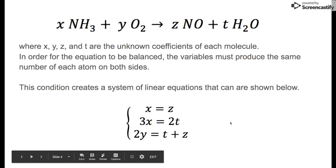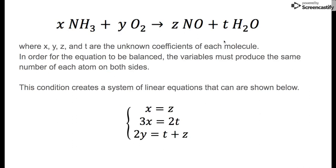The proportionality is going to be a little bit different, so our variables x, y, z, and t are going to be our proportionality coefficients. In order for the equation to be truly balanced, the variables in front of each molecule must produce the same number of each atom before the reaction and after the reaction. This condition is going to create for us a system of linear equations.